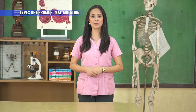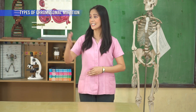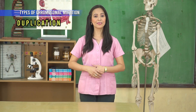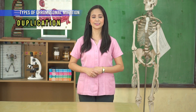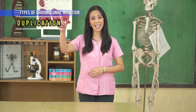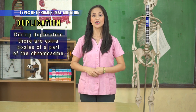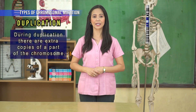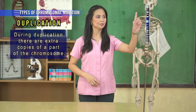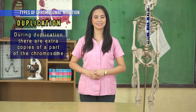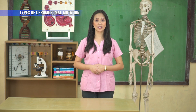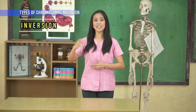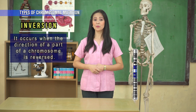The fourth type of chromosomal mutation is duplication. During duplication, there are extra copies of a part of a chromosome. Another chromosomal mutation is inversion — it occurs when the direction of a part of a chromosome is reversed.